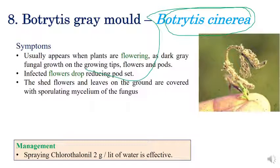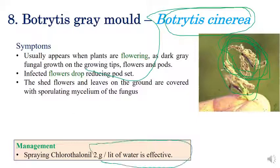Botrytis gray blight is caused by Botrytis cinerea. Symptoms are especially observed at the flowering stage. Dark gray fungal growth — sometimes appearing almost black — can be seen on pods and flowering parts. Later stages show flower drop and yellowing of leaves. Sporulation of the fungus and mycelium appearance are clearly visible on the leaf. Spraying chlorothalonil at 2 grams per liter of water can give effective control against this disease.